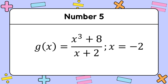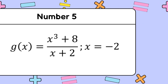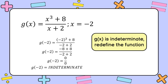For the fifth item, we have g of x equal to x cubed plus 8 over x plus 2, given x equal to negative 2. Evaluating g of negative 2: negative 2 cubed plus 8 over negative 2 plus 2 equals negative 8 plus 8 over 0, which is 0 over 0 — indeterminate. Therefore, we must redefine the function to give a real value.